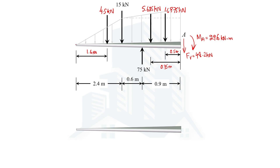We start from the left-hand side, first considering the region from the most extreme point up to where the 15 kN force is acting — a distance of 2.4 meters. X is measured from the exterior point. The vertical axis shows shear force and the horizontal axis shows distance along the centerline of the wing. At the starting point there is no shear, but as we move right, shear develops.